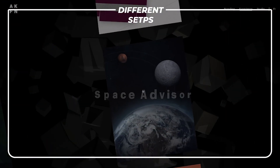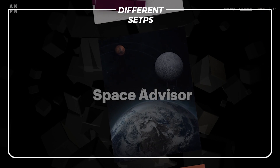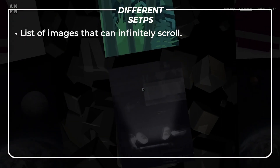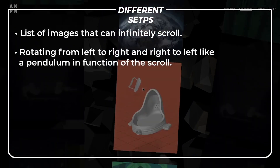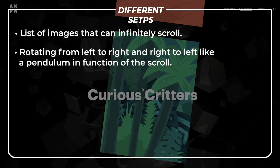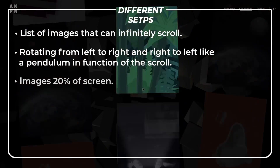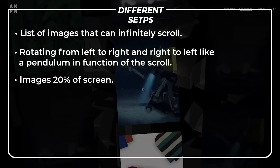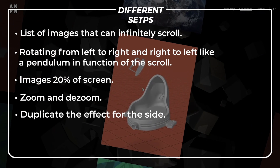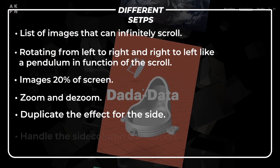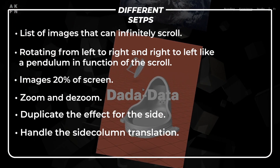As usual, before starting to code something, you better analyze it very well. Here are the features we needed to code to make this effect alive: a list of images that can infinitely scroll, rotating from left to right and right to left like a pendulum in function of the scroll, images taking 20% of the screen more or less, zoom and de-zoom, duplicate the effect for the side column and handle the side column's translations.